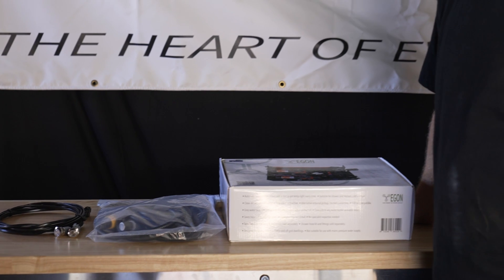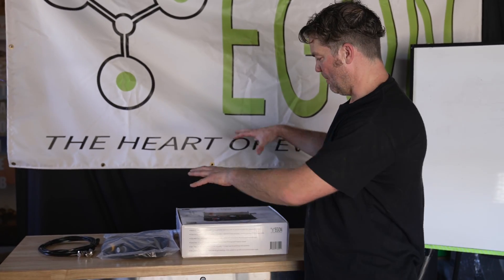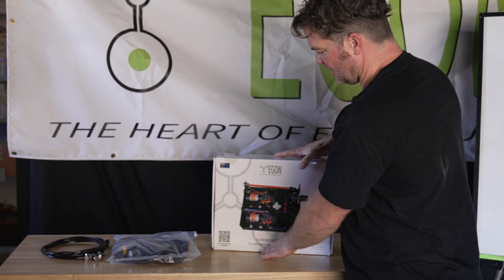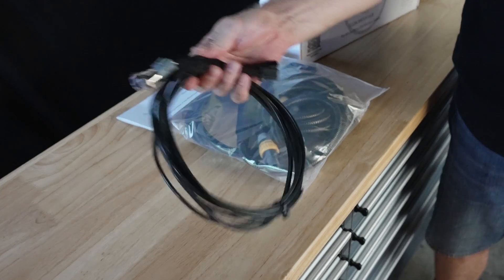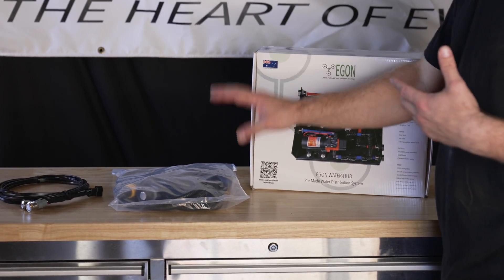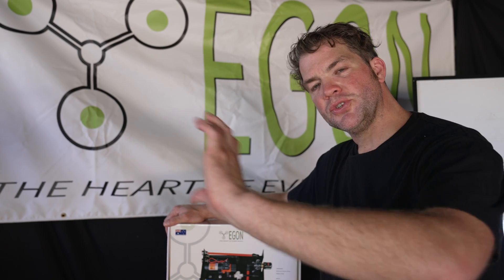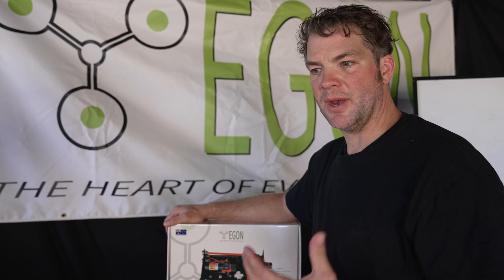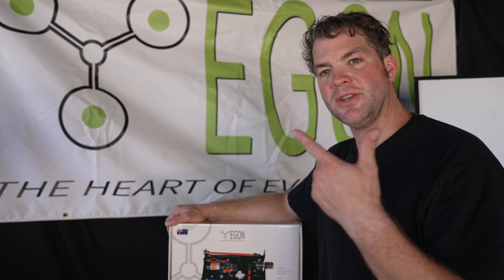This is an instructional video where we show you how to install and how to use the Egan Water Hub. You can buy the unit by itself, which comes in this box. There's also an additional shower and hose kit and an electric kit for connecting the pumps. This product will allow you to have a water distribution system in your vehicle. One circuit comes from your drink water tank, which is quite precious when you're out and about.